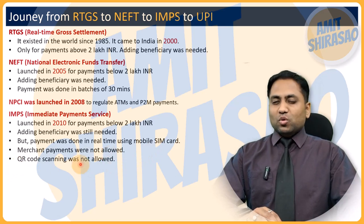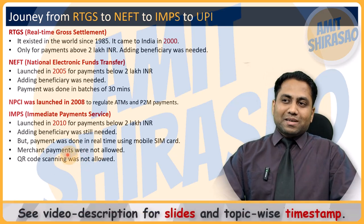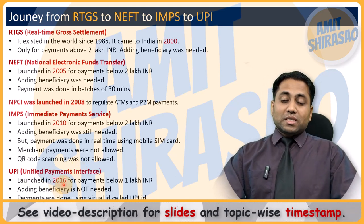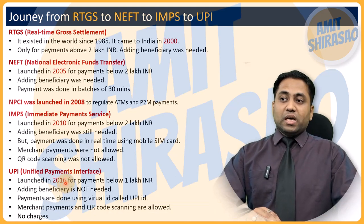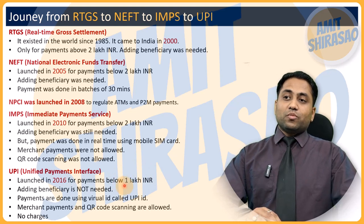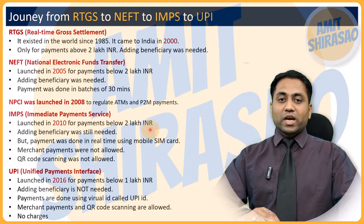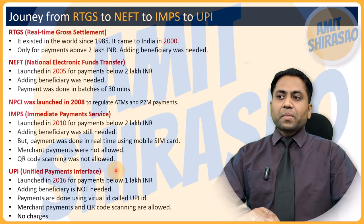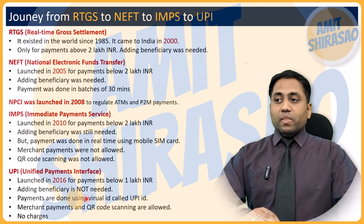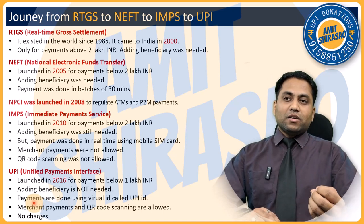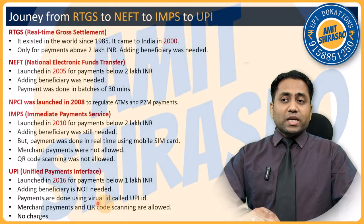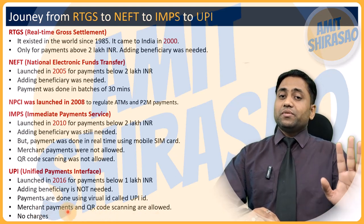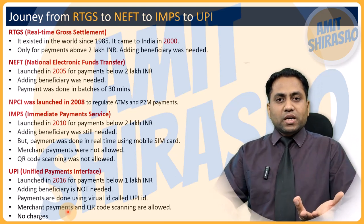In IMPS, merchant payments and QR code scanning were not allowed. UPI came in 2016 — six years after IMPS. UPI payments were initially for lesser than one lakh rupees (check the current limit as it may have increased). Adding a beneficiary was not required, which greatly increased UPI's utility. Payments were done using a virtual ID called the UPI ID. Merchant payments and QR code scanning were allowed, and no charges were levied on either the sender or the receiver.